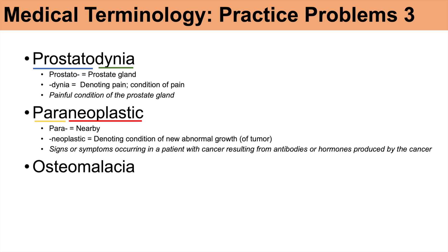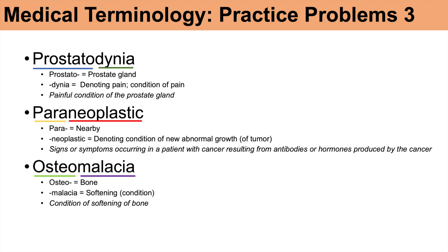The next word is osteomalacia. Breaking it down: 'osteo' means bone, and 'malacia' means softening or it's a condition of softening. So osteomalacia really means a condition of softening of bone.